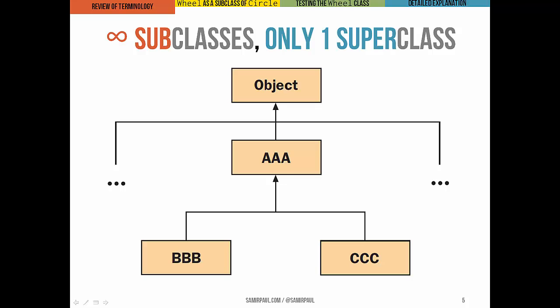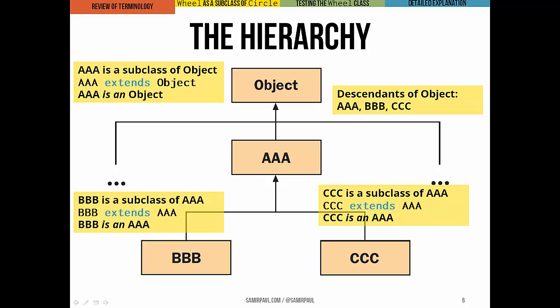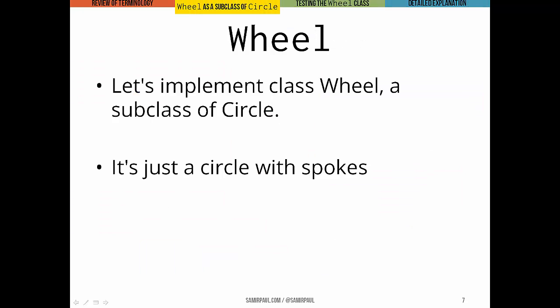Likewise, CCC could have as many subclasses as we wanted to give it. But it has only one superclass, AAA. Now the descendants of a class would really just mean that class's subclasses, plus their subclasses, and their subclasses, and so on forever and ever and ever through the hierarchy.